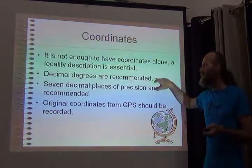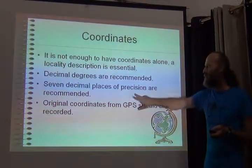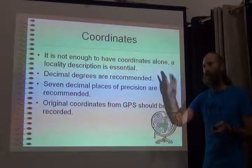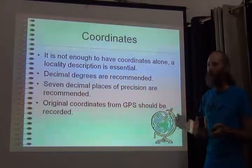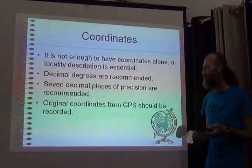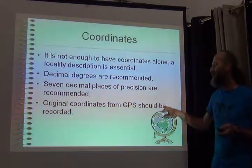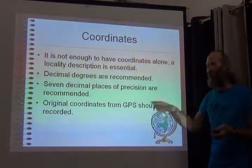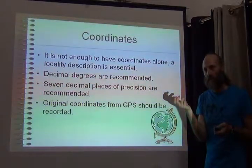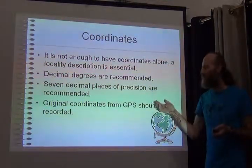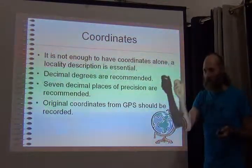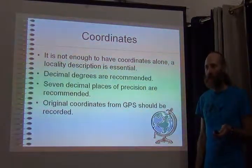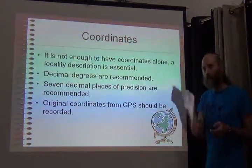The recommendation is to keep decimal degrees and, as discussed earlier, to keep seven decimal places of precision for the reasons of being able to transform back and forth without losing information. When you're taking coordinates from the GPS, record them as they come from the GPS. Don't do an interpretation. It's just like keeping a verbatim locality — write it down as you see it. You can do transformations later but be faithful to what you saw.